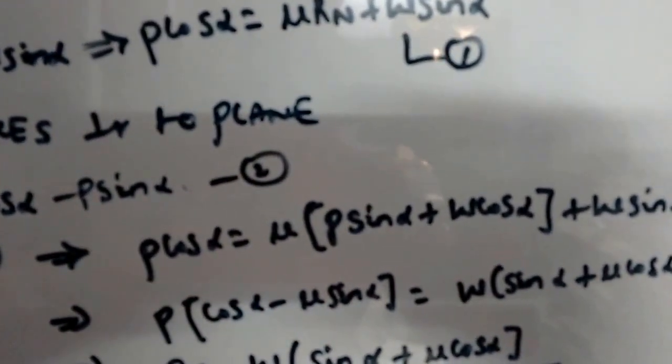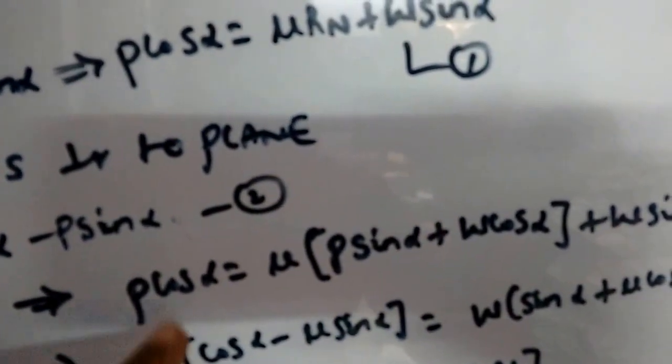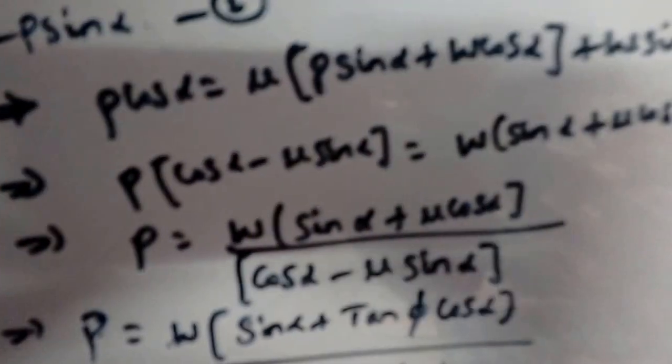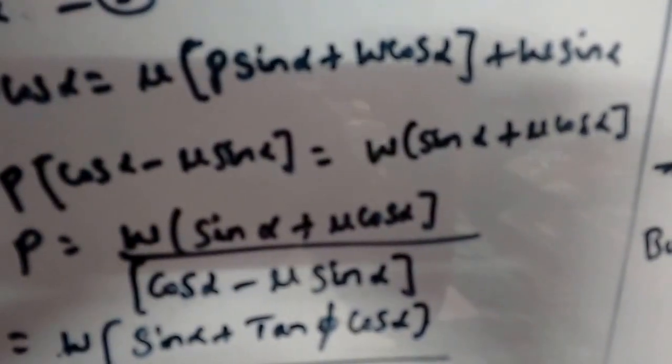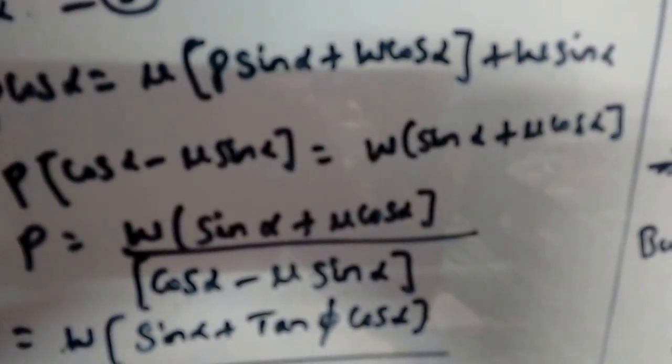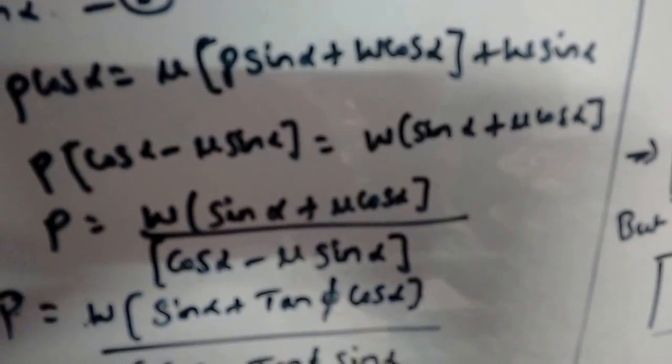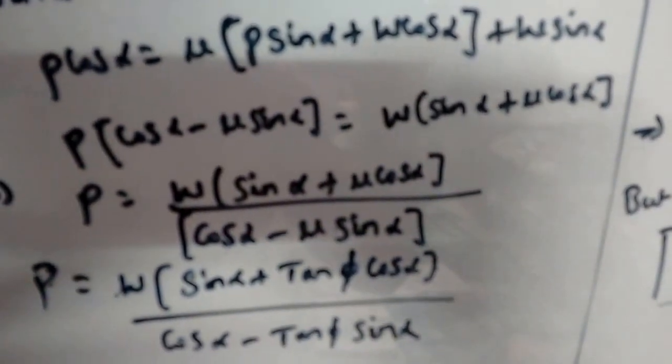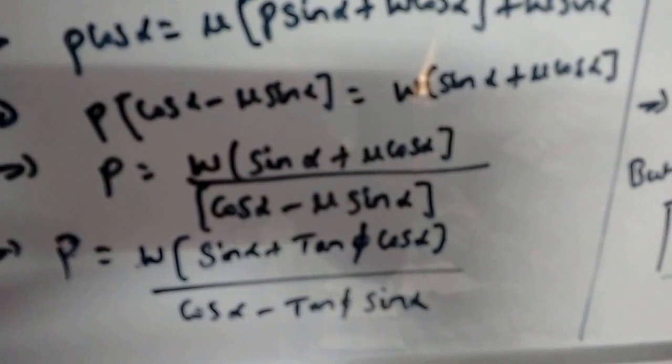Substituting RN into equation one: P cos(alpha) = mu * (P sin(alpha) + W cos(alpha)) + W sin(alpha). Taking P and W as common terms: P * (cos(alpha) − mu * sin(alpha)) = W * (sin(alpha) + mu * cos(alpha)). From this equation we can calculate P.